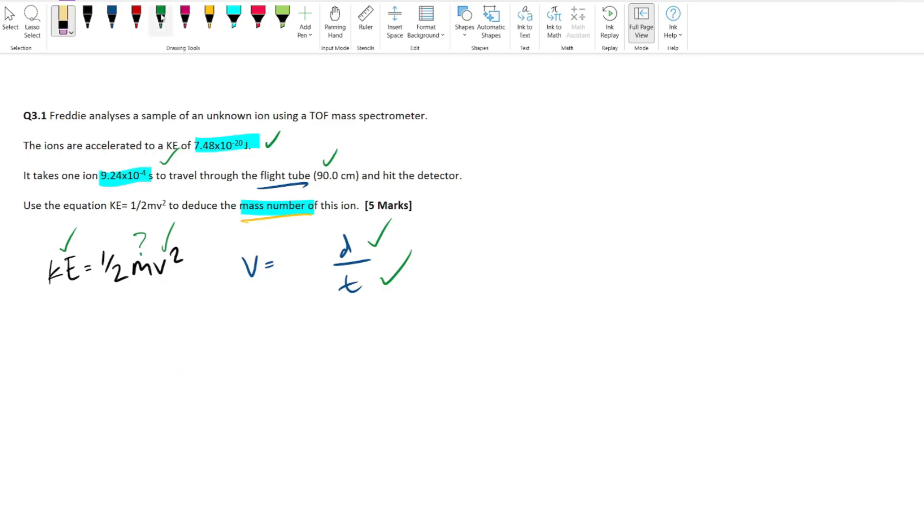One thing you'll notice straight off the bat is I said the units for velocity is meters per second. What is the units of our distance right here? Centimeters, so you're going to have to convert this into meters, in other words 0.9 meters. Let's work out our velocity first: distance 0.90 divided by our seconds, which is 9.24 times 10 to the minus 4.